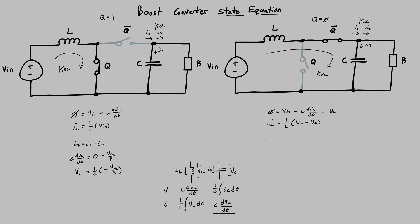And then for the KCL, we just have the same: I3 current going into the capacitor is equal to I1 minus I2. And I1 now has current actually flowing, which is the current going through the inductor. And I2 is the same — voltage across the capacitor over the resistor. So we end up with another simple state equation.